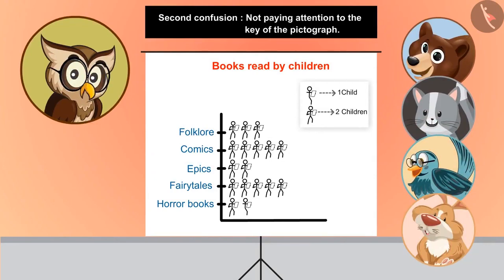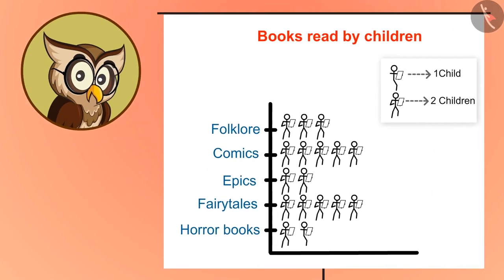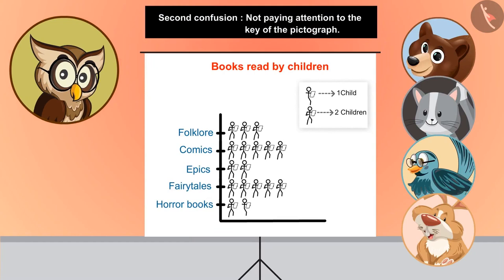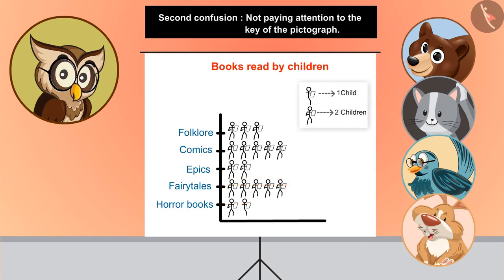So now your confusion must have been cleared: while counting more or less than a particular number, the number itself is not considered. Sometimes it has also been seen that while looking for answers from the pictograph, children do not pay attention to the key given on it. In this pictograph we are showing a relation between children's books and the number of kids who like them. By looking at the pictograph, can you tell me how many kids love fairy tales? Five. Let me say 10. Chi Chi has rightly answered — each stickman depicts 2 children, so 5 pictures will depict 10 children.